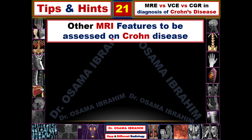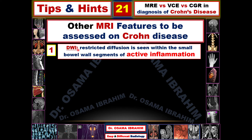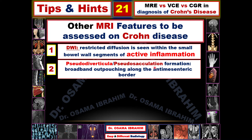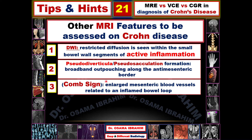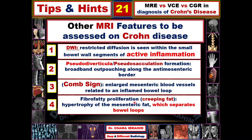Additional MRI features for Crohn's disease include diffusion-weighted imaging, where restricted diffusion represents active inflammation. Pseudo-diverticular or pseudo-sacculation formations are another feature, meaning broad-based outpouchings along the anti-mesenteric border. The comb sign refers to enlarged mesenteric blood vessels related to inflamed bowel loops resembling a comb. Fibro-fatty proliferation is also a well-known feature detectable by MRI.